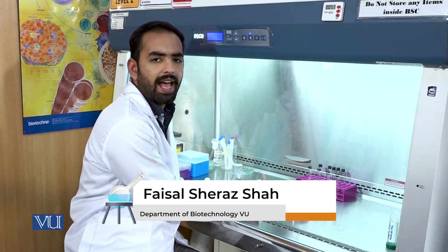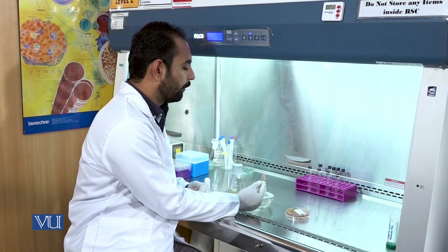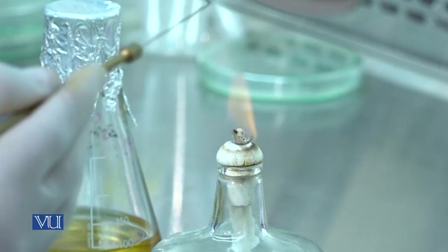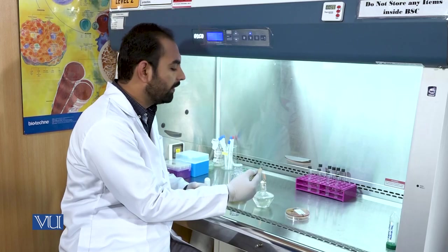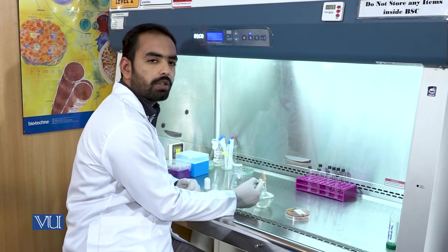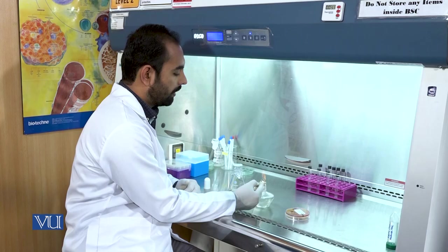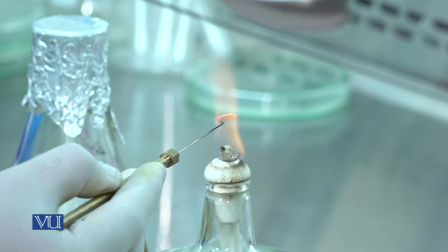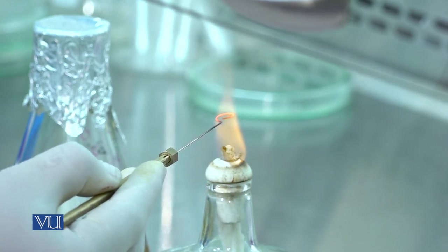We have to inoculate the culture into liquid LB media. First, we take an inoculating loop and sterilize it by putting it on the flame. When it turns red hot, sterilization is done.